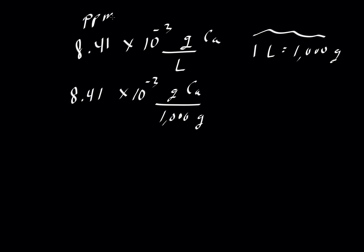So if we instead write this, we'll just rewrite this with an exponent on the bottom. So 8.41 times 10 to the minus 3 grams of calcium. And that is over 10 to the 3 grams of solution. We can now multiply top and bottom of this. So grams of calcium over 10 to the 3 grams of solution.